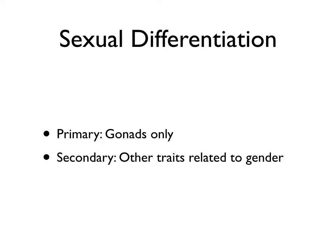Primary differentiation is based upon the reproductive organs themselves. Those are primary sexual characteristics that can be used for identification of the biological sex.